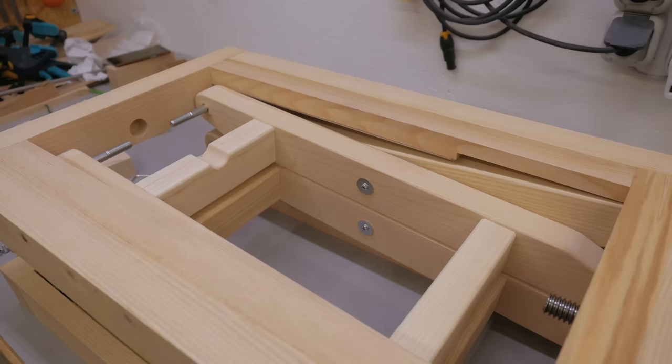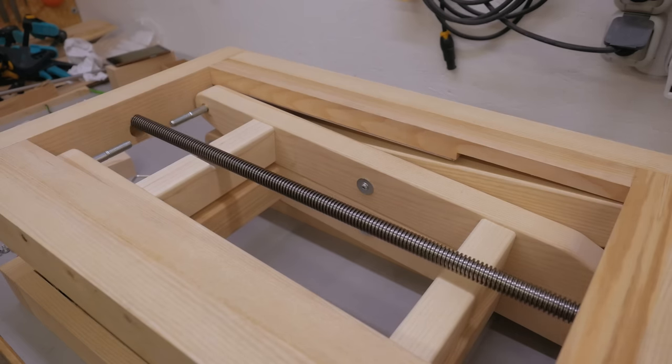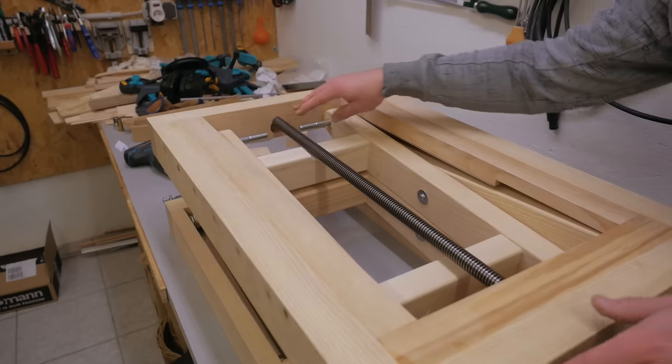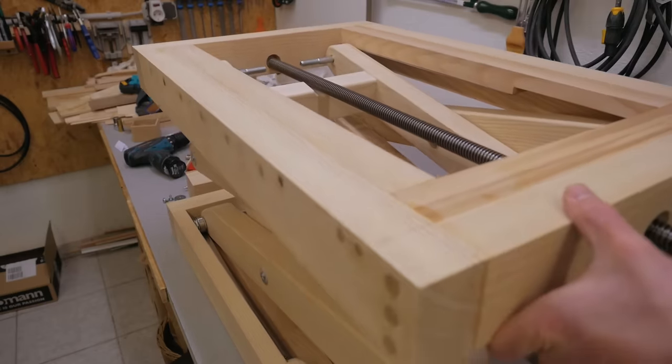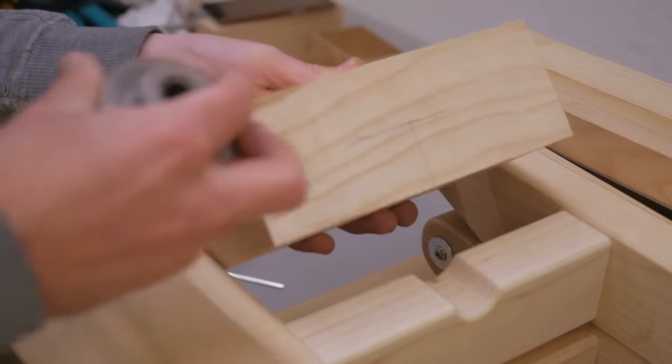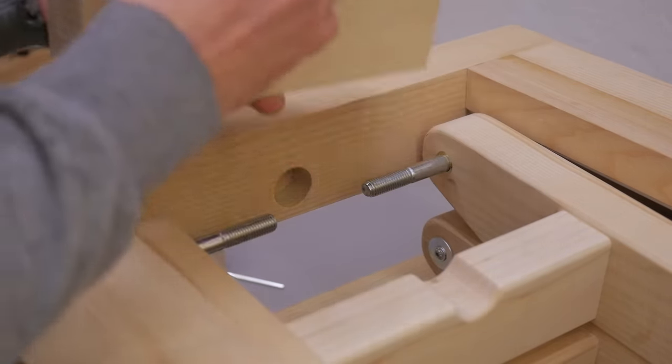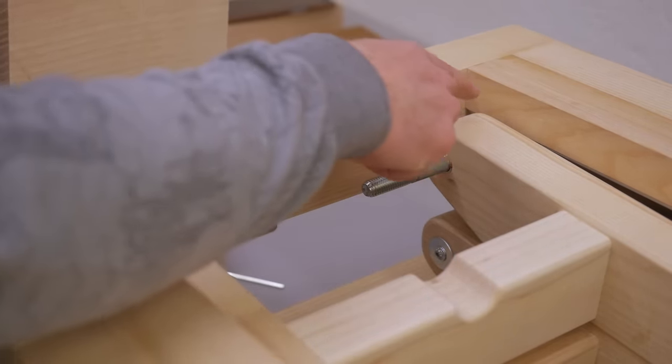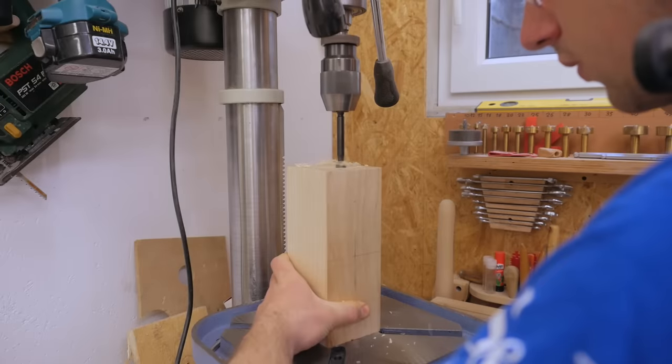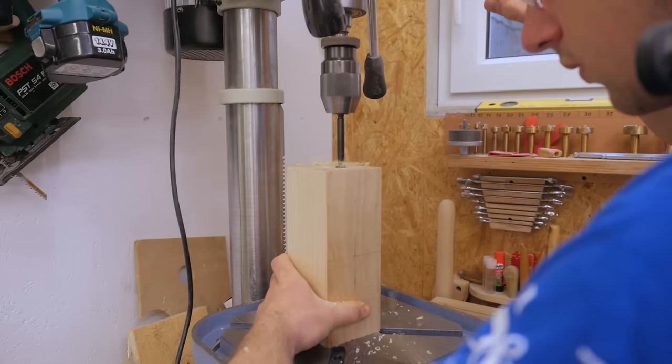Next the threaded rod. There needs to be something here that it can pull against to lift it up. There will be this block which houses the flange nut as well as these two bolts where the bearings are attached to. Therefore I drilled and tapped holes in both ends.